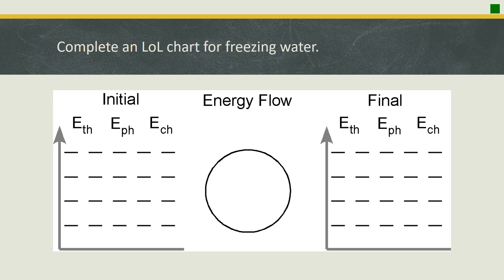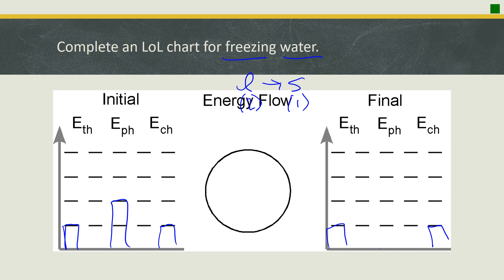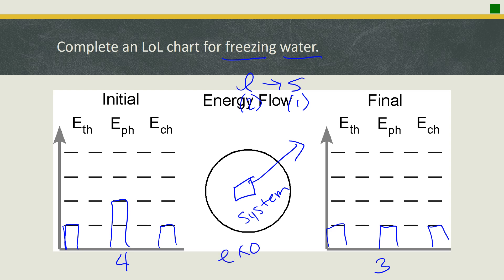The last example is an LOL diagram for freezing water. Freezing means temperature is not changing, so ETH stays at one bar on both sides, and ECH stays at one bar on both sides. For phase energy: freezing goes from a liquid to a solid, so EPH goes from two bars to one bar. Counting total bars — four on the initial side, three on the final side — one bar left the system. Because energy is escaping the system, this is an exothermic process.